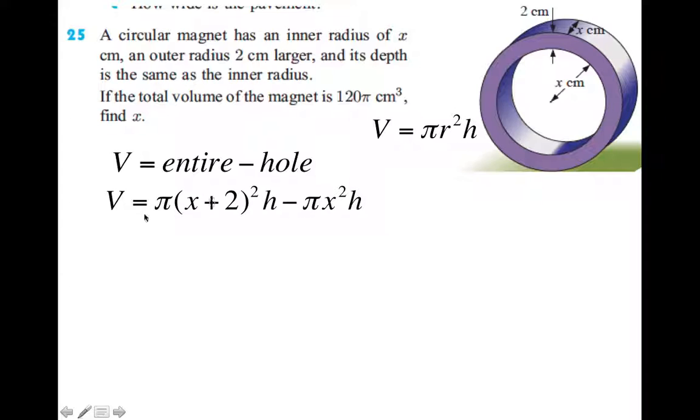So we have this equation here. So πr²h, πr²h, r². So for the entire shape, the radius, like I said, for the entire shape, the radius is x plus this little bit.